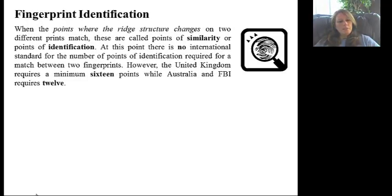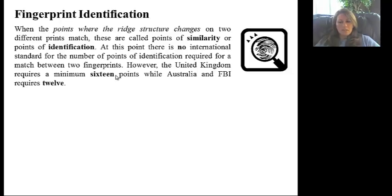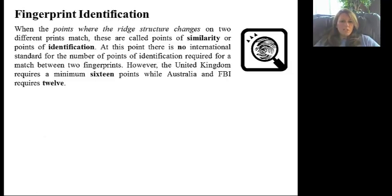When we're looking at fingerprint identification, we're looking at the ridges. To be a similar or close match — and you need to be careful with the word 'match' — the United Kingdom requires a minimum of 16 points to be similar or close to a match. Whereas in the United States, the FBI, and Australia, a minimum of 12. The more you have, the better.